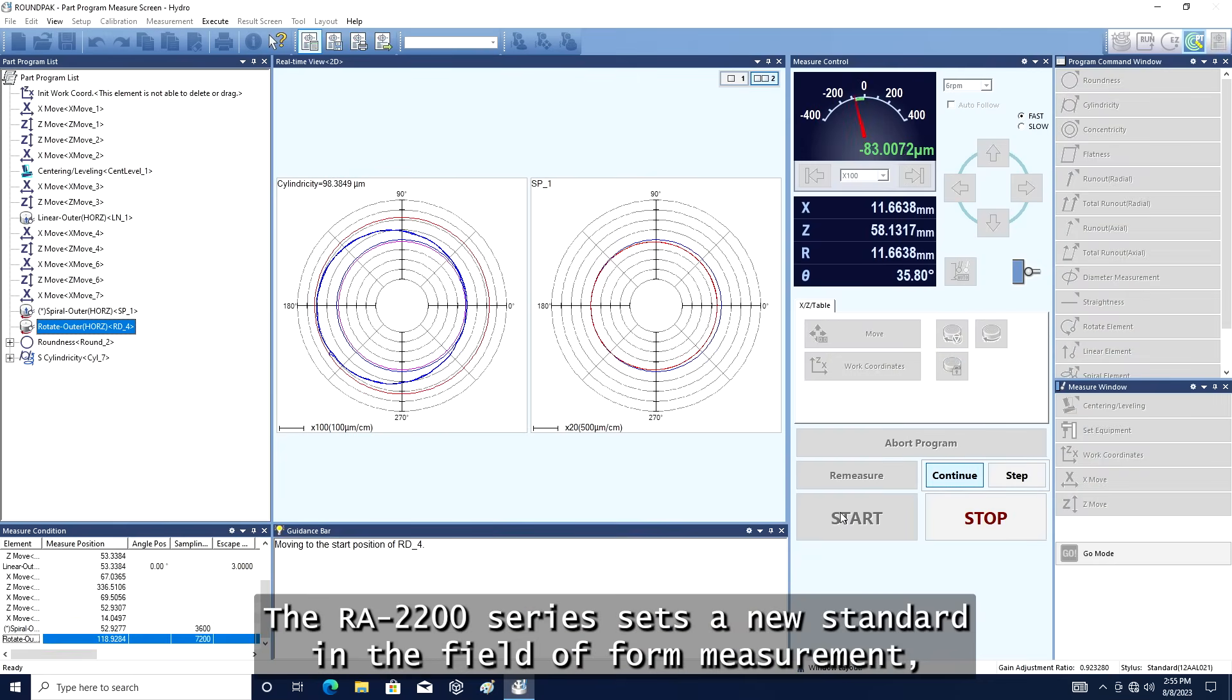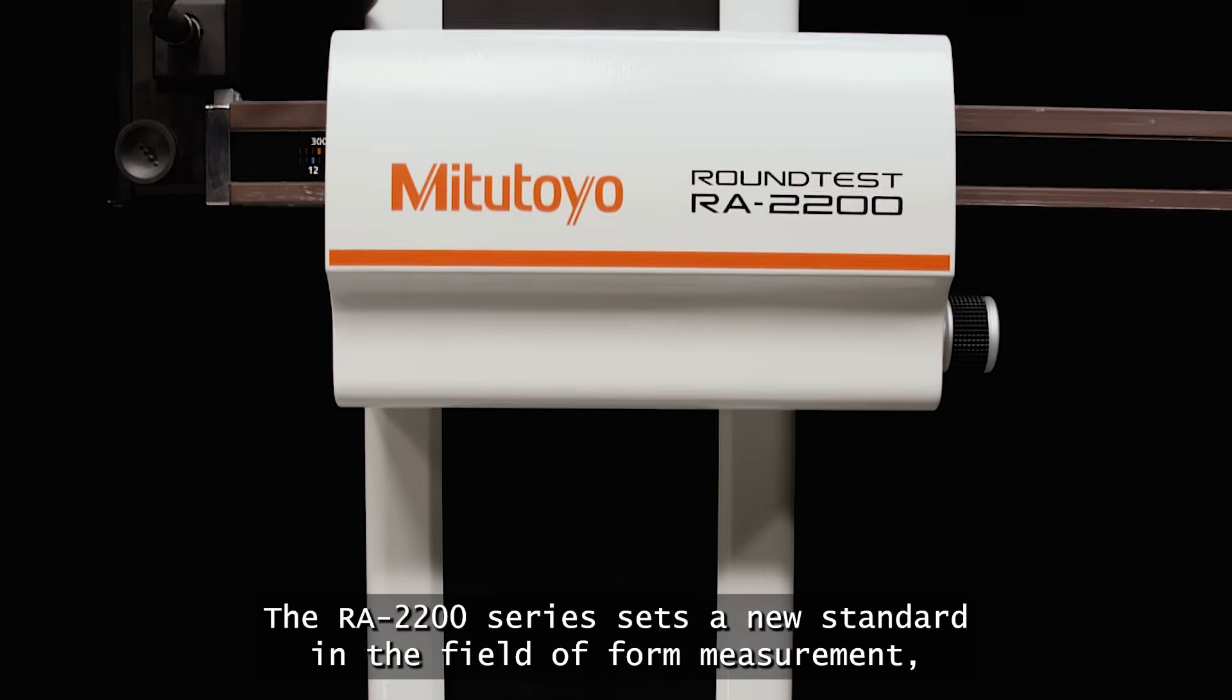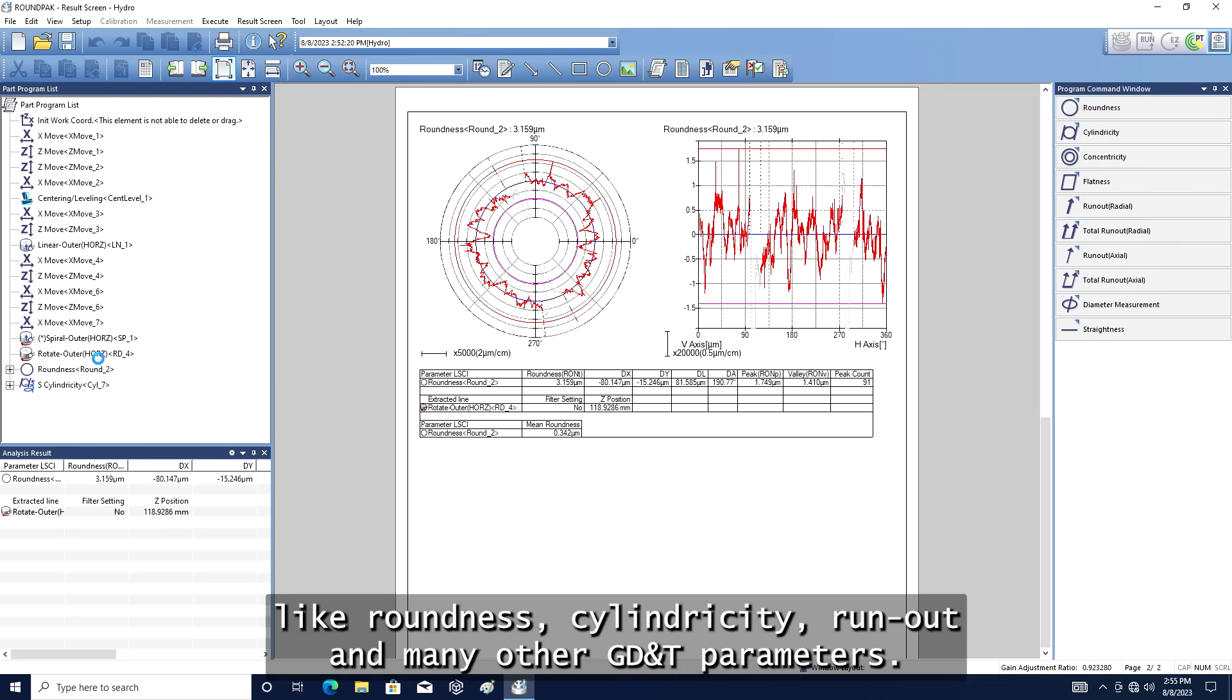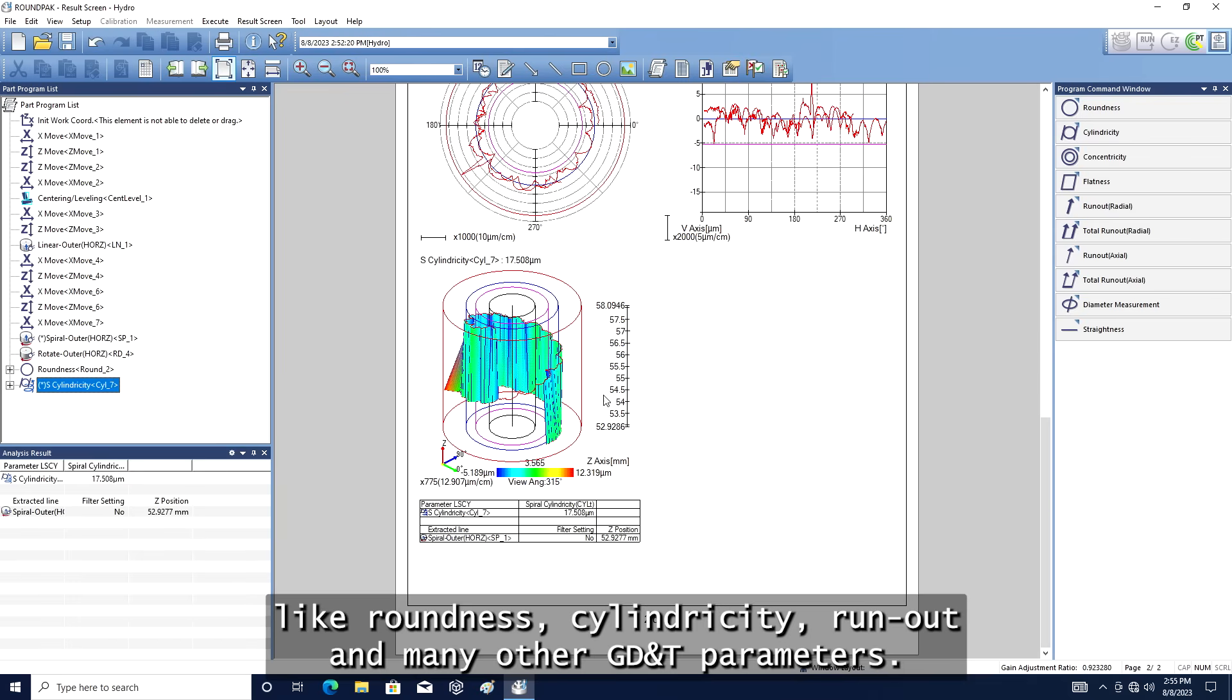The RA2200 series sets a new standard in the field of form measurement, with its capability of performing advanced analysis like roundness, cylindricity, runout, and many other GD&T parameters.